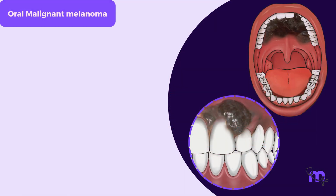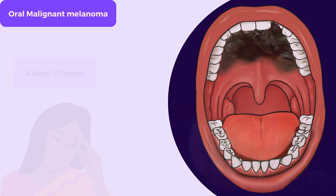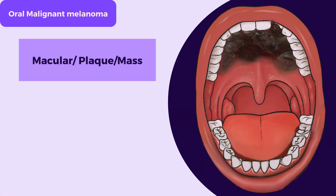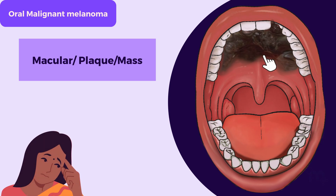Oral malignant melanoma is more common in people over 50 and commonly affects the palate and gingiva, as seen in our case. These growths can be macular, plaque-like, or as in our patient, a mass.